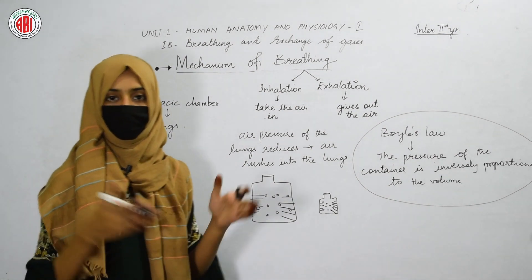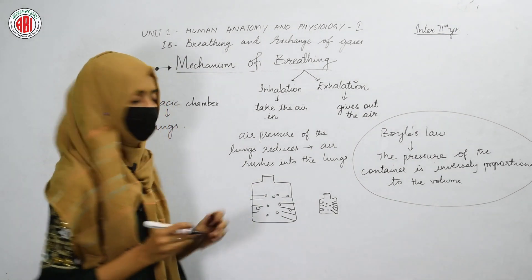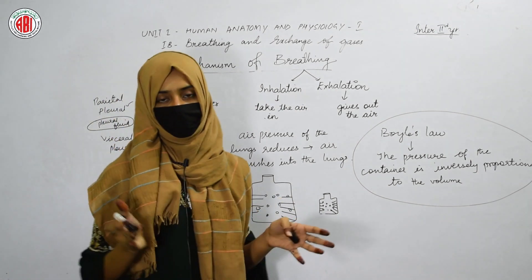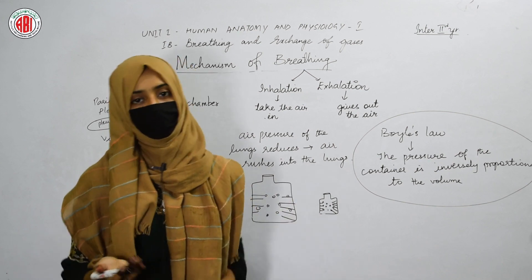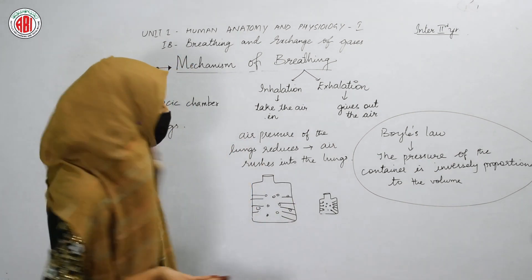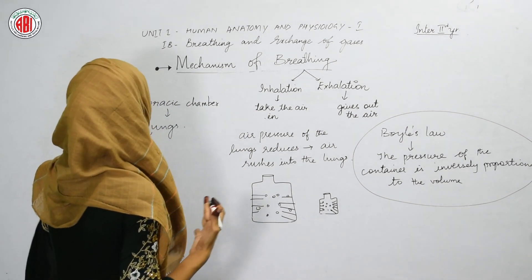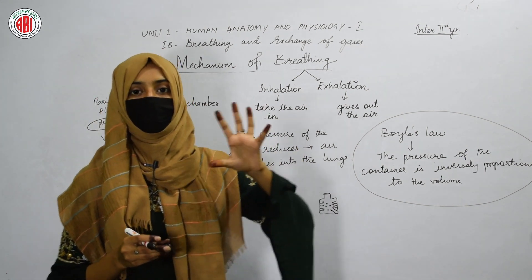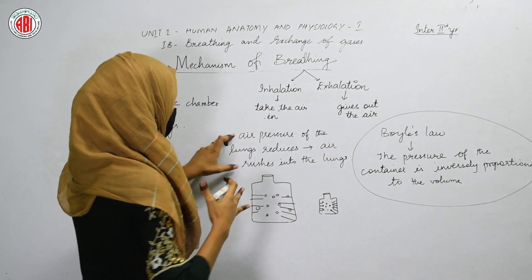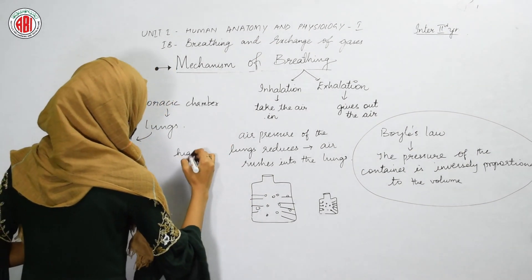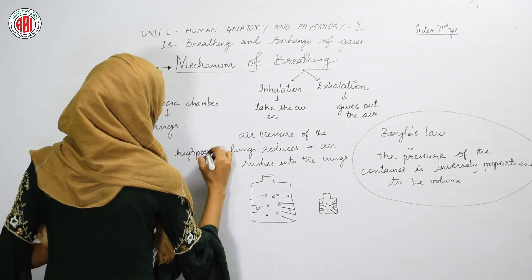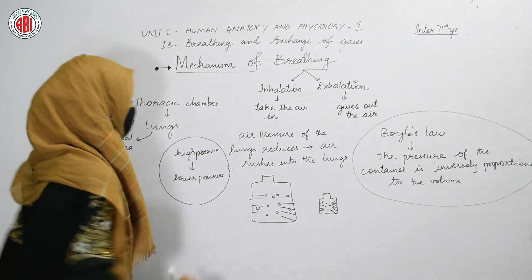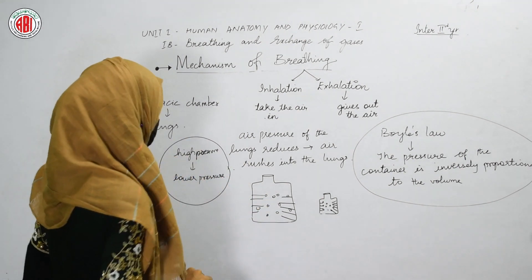When the thoracic chamber expands, the lungs are also going to expand — because lungs are balloon-like structures. When the thoracic chamber expands, they automatically expand too. Due to the expansion of lungs, the air pressure of the lungs decreases compared to the atmospheric air pressure. Air molecules always move from higher pressure to lower pressure. For example, if you spray a perfume in a corner of a room, you can sense the smell in the whole room because the molecules move from high concentration towards lower concentration.